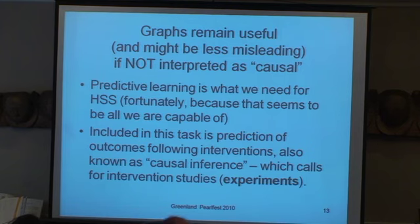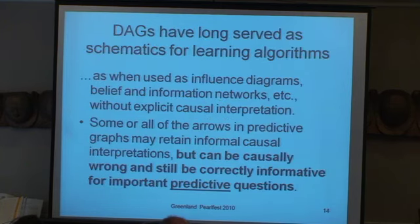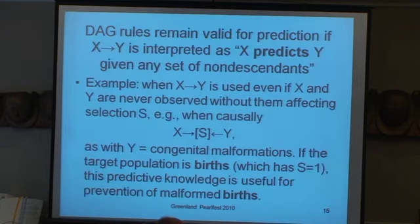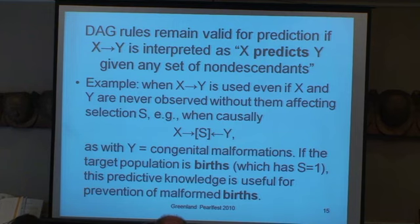Often what we need for health and social science is something predictive, and often that's all we're capable of. That includes prediction of outcomes following interventions — that's causal inference — and that calls for intervention studies and experiments, which in epidemiology often refute, at roughly the rate you'd expect if the epidemiologic studies were coin tosses, often refuting findings from 20 studies. DAGs have long served as schematics for learning algorithms — one area where Judea has been a monumental contributor — and that's what happens when they're used as influence diagrams, belief networks, and so on, without explicit causal interpretation.